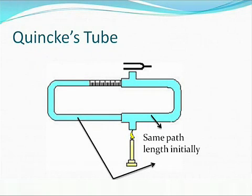Now let's study the Quincke's tube. Quincke's tube is a device used to determine the velocity of sound in a fluid. Unlike other devices, it does not make use of the phenomenon of stationary waves — it simply makes use of the phenomenon of interference.